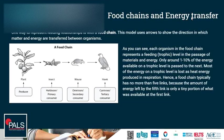One way to represent feeding relationships is with a food chain. This model uses arrows to show the direction in which matter and energy are transferred between organisms. Each organism in the food chain represents a trophic level. You can see the producer — the plant — which is eaten by an insect, a grasshopper, which is a primary consumer and a herbivore. The grasshoppers are eaten by mice. The mice are omnivores, which means they might feed on plants as well, but they are secondary consumers in this food chain. And we have a hawk who is the tertiary consumer and a carnivore who eats the mouse.